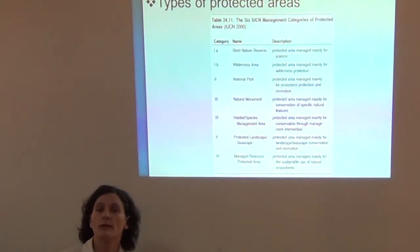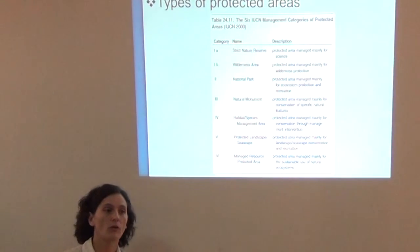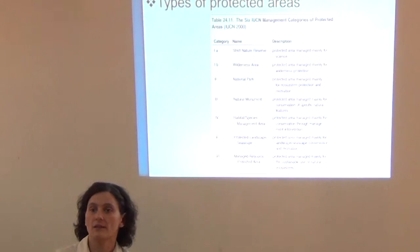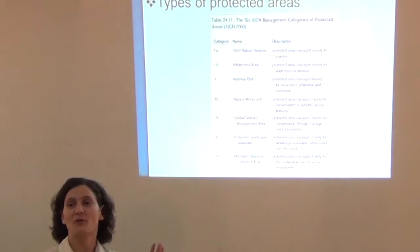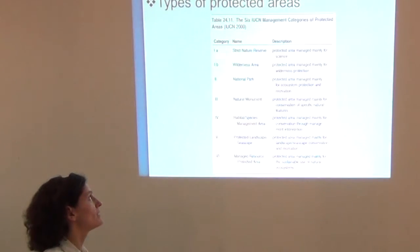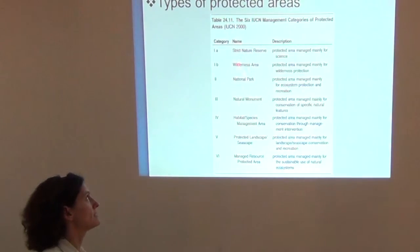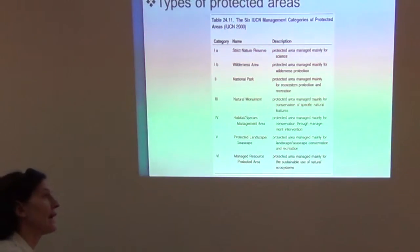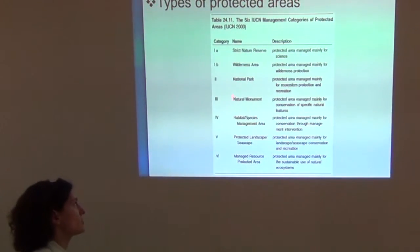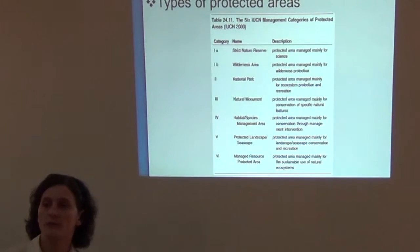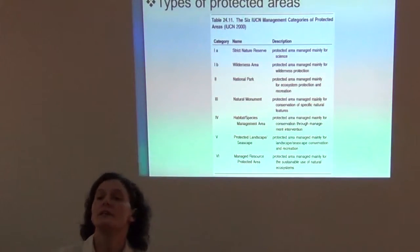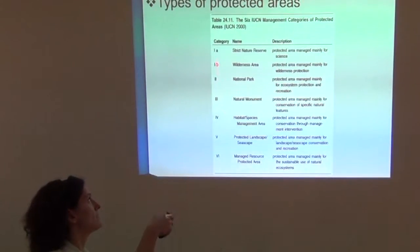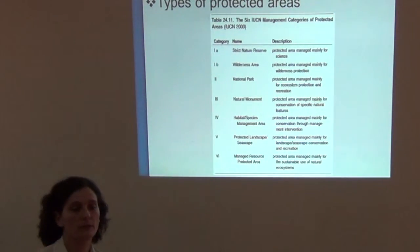We kept mentioning the types and categories of protected areas — the IUCN categories. I just wanted to have the table with the IUCN categories on one presentation: strict nature reserve, wilderness area — these two have the highest conservation power — then national parks, and going down the list we have more diverse activities going on in protected areas as we go down from category one to six.